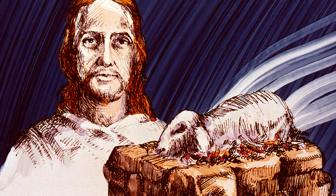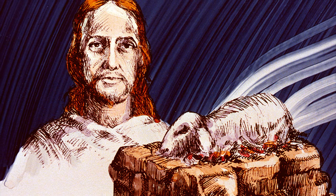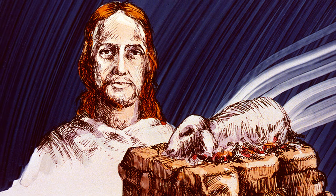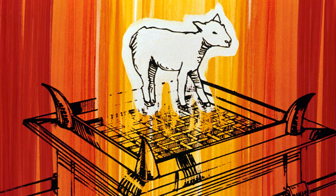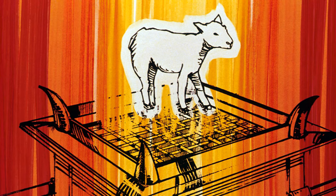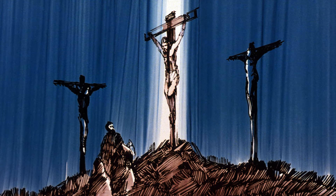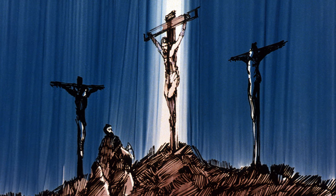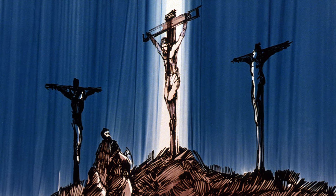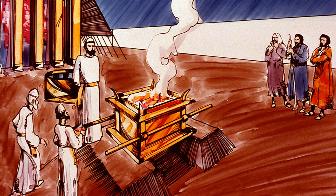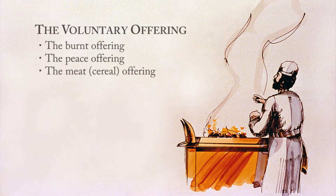This was done through the use of types and symbols which the Lord wove into every aspect of the law. A type is something that represents spiritual truth through symbolic means. A similitude is something similar to something else. Thus, the animal offered as a sacrifice was a type of Christ. It represented Christ symbolically, and the offering of the animal was in similitude, or similar to the future sacrifice of Jesus on the cross. The Mosaic ordinance of sacrifice consisted of two categories of offerings: one, the voluntary offering, which is the burnt offering,